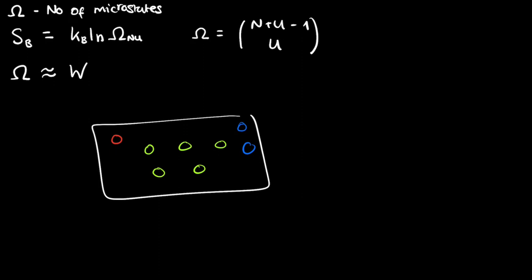This is a rough example — I've basically said that eight is approximately five. But if you have a system of n particles, and n is a massively big number, you can actually approximate the total number of microstates by the number of microstates in the most probable macrostate — W_max. So I'll put a little max underneath there: this is the number of microstates in the most probable macrostate, and this is how we apply this.